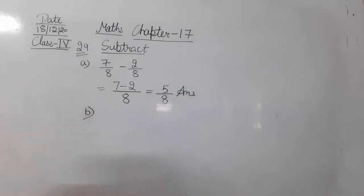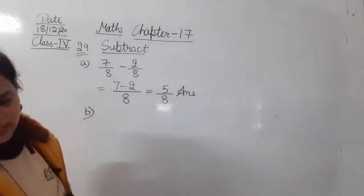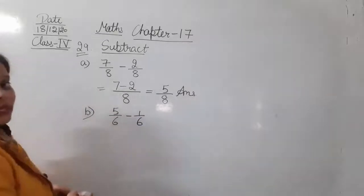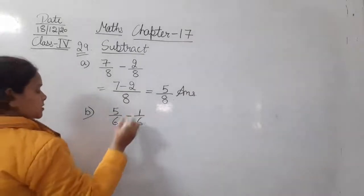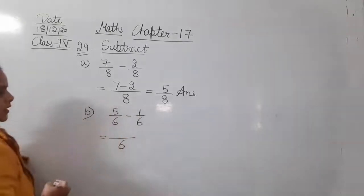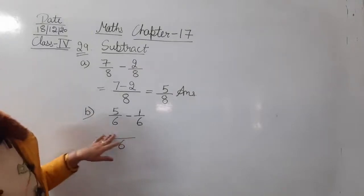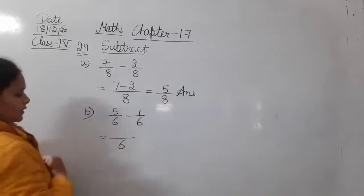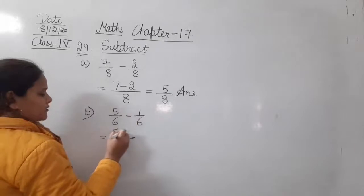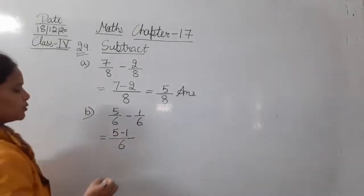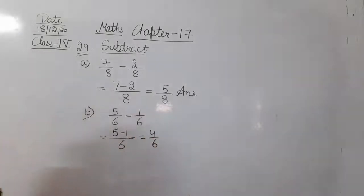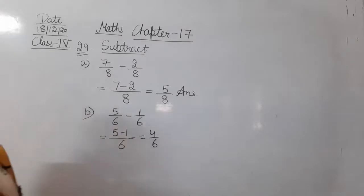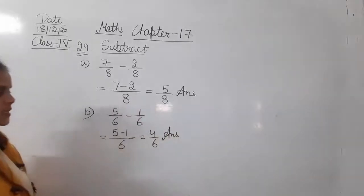Moving to part B. In the B part, the question is given: 5 upon 6 minus 1 upon 6. The denominator of both fractions is equal, so we take the common denominator, 6. Now we subtract the numerators: 5 minus 1 is equal to 4. So the answer is 4 upon 6.